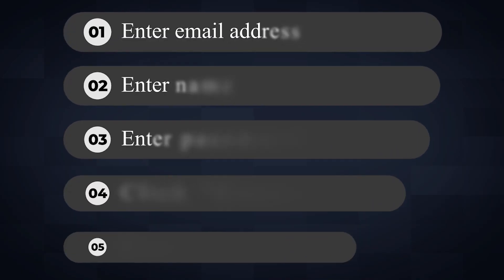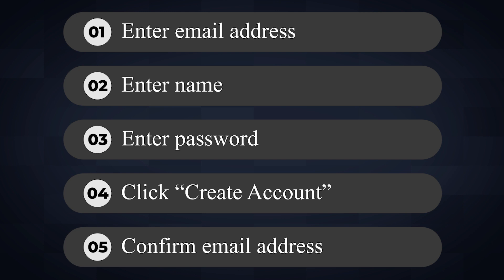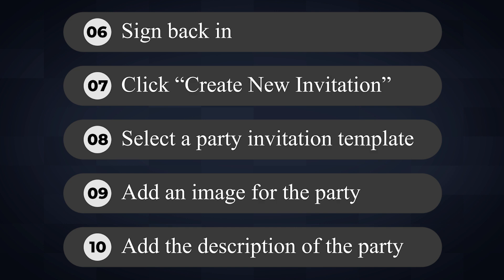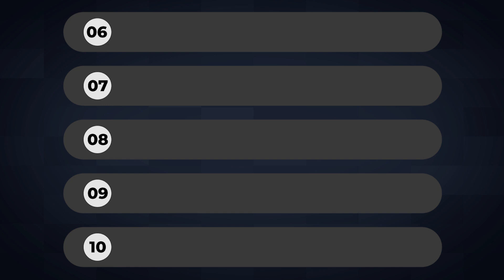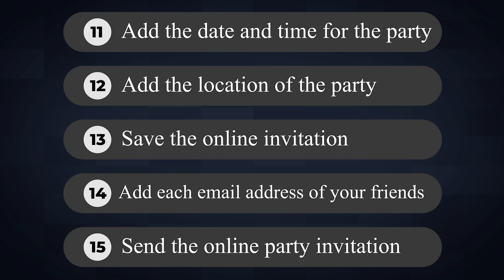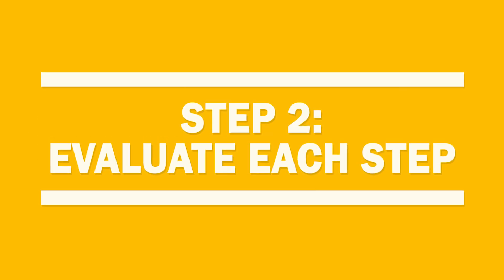Let's say the current onboarding path from their site looks something like this. Step one: enter email address. Step two: enter name. Step three: enter password. Step four: click create account. Step five: confirm your email address. Step six: sign back in. Step seven: click create new invitation. Step eight: select a party invitation template. Step nine: add an image for the party. Step ten: add the description of the party. Step eleven: add the date and time for the party. Step twelve: add the location of the party. Step thirteen: save the online invitation. Step fourteen: add each email address of your friends. Step fifteen: send the online party invitation. And already you can tell — that's a mouthful.